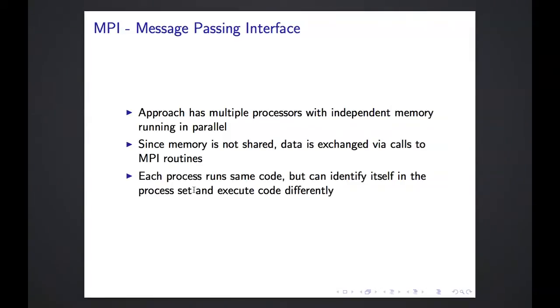So with the MPI approach, the program when it's running has access to multiple processors with independent memory. So you have multiple processes, each one with its own memory region running in parallel. Now the memory is not shared between these processes. So the data has to be exchanged via calls to MPI routines. So each process is running the same code. They all start off running the same code. But the MPI environment allows each process to identify itself. Let's say when you have eight processes, one of them will be process zero, another will be process one, process two, and so on. And even though they are running the same code, there can be something in the code which specifies if you are process zero, run this if statement, if you are process one, run this if statement, and so on. So even though the source code is the same, the executable actually diverges as it runs.